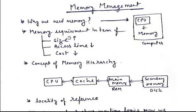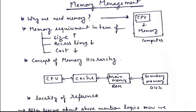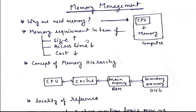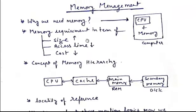These are some basic questions which we want to cover in this session: Why do we need memory? Memory requirements in terms of price, access time, and cost. The concept of memory hierarchy — why we need a memory hierarchy, and whether a computer system can work without it, and what is the performance impact. And why we need locality of reference and what is the locality of reference. We have to discuss these fundamental questions first, and when we know these, we will be able to get the concepts in a very clear perspective.